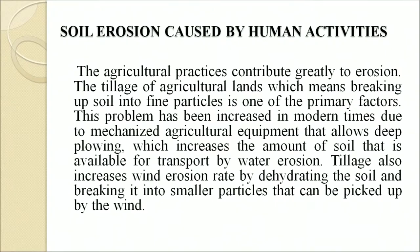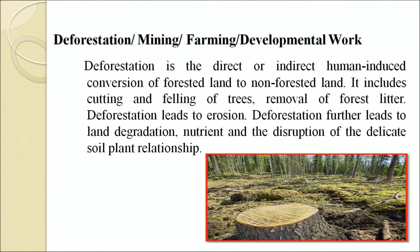Agricultural practices contribute greatly to erosion. The tillage of agricultural land, meaning breaking up soil into fine particles, is one of the primary factors. This problem has increased in modern times due to mechanized agricultural equipment that allows deep plowing, which increases the amount of soil available for transport by water erosion. Tillage also increases wind erosion by dehydrating the soil and breaking it into smaller particles. Human activities that accelerate soil erosion include deforestation, mining, farming, cultivation, mountain slope farming and monoculture. Deforestation, mining, farming and development work are major causes.